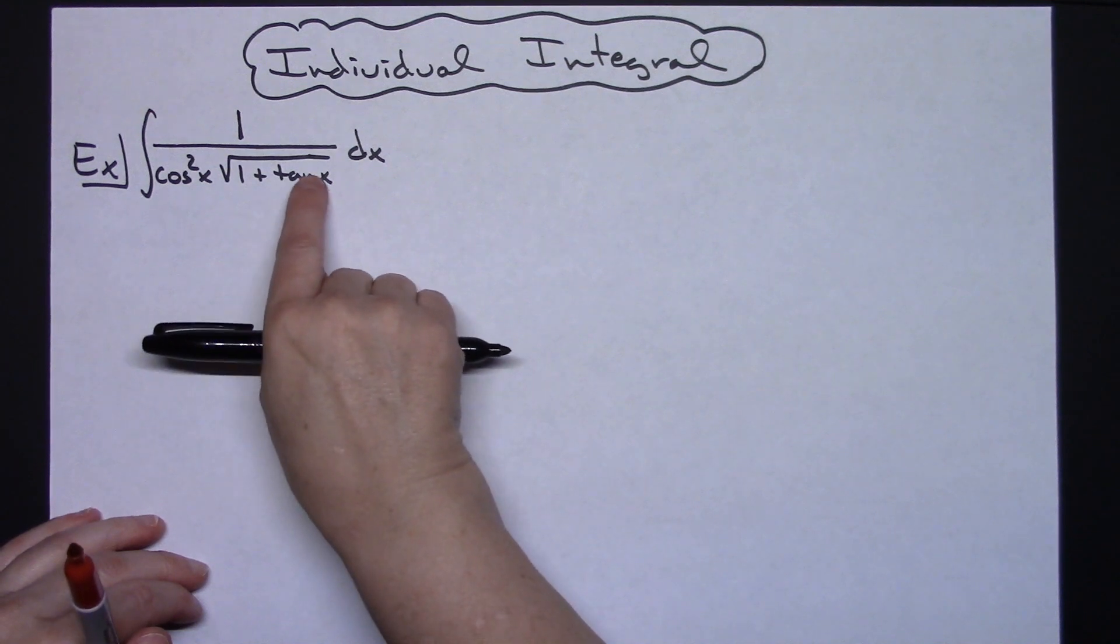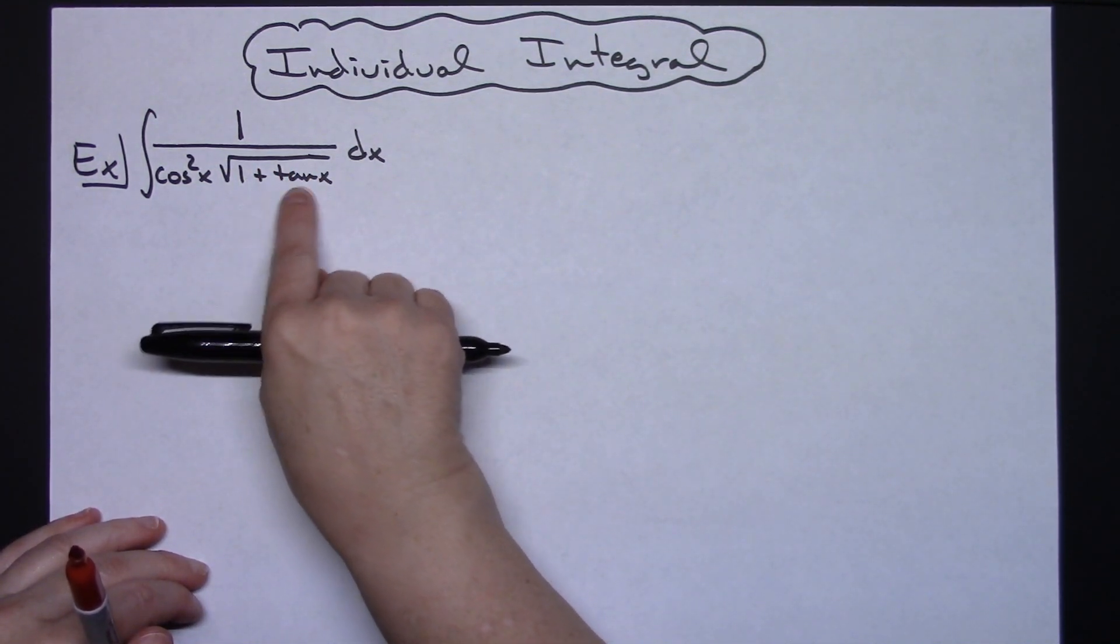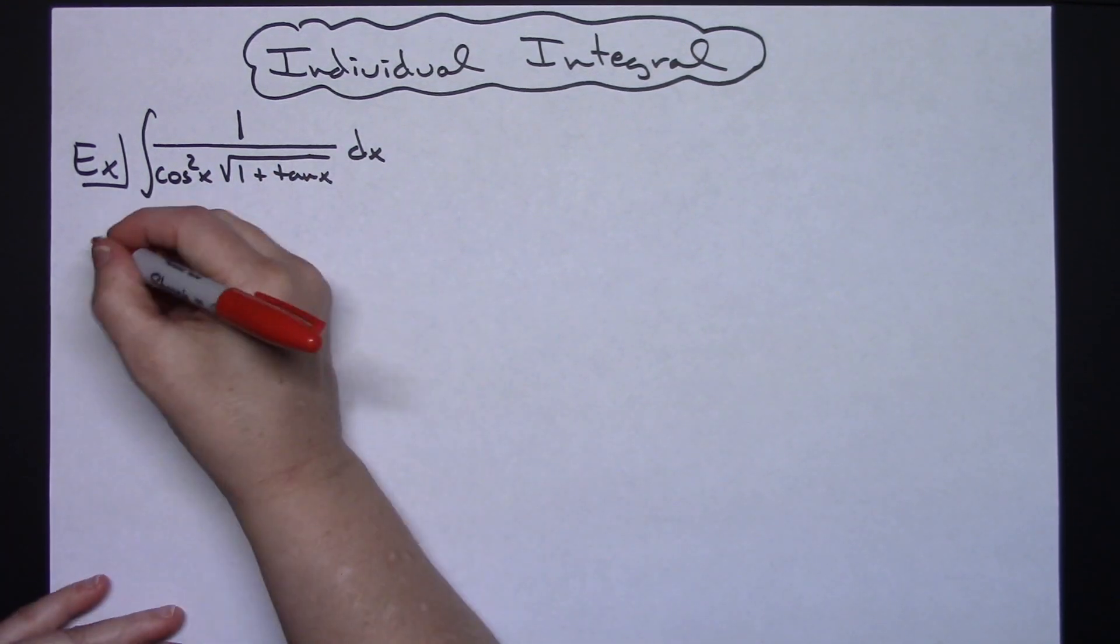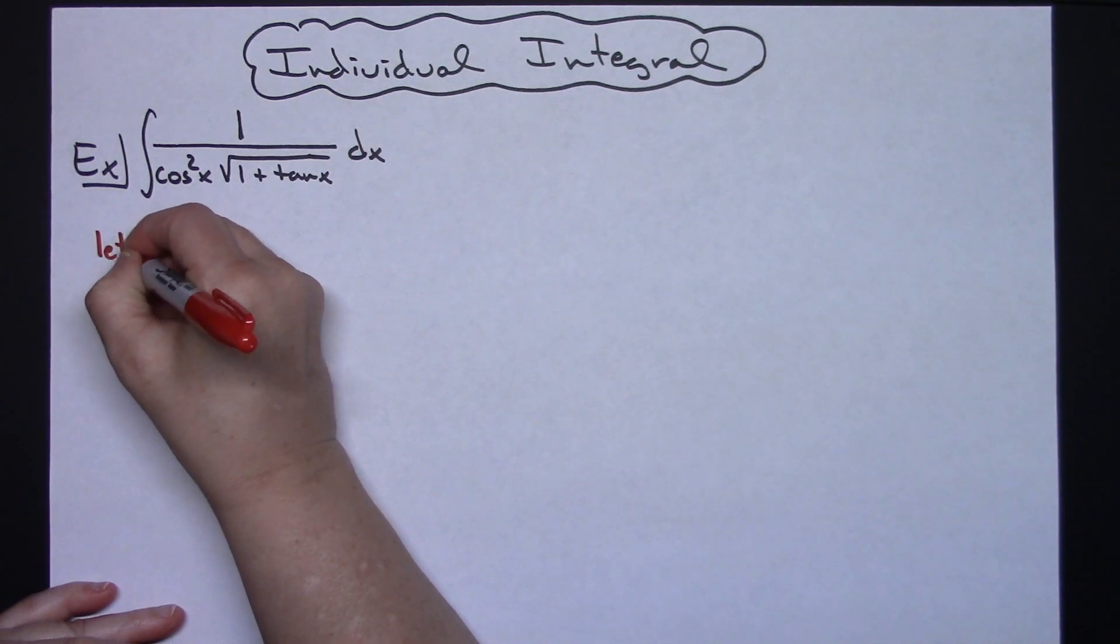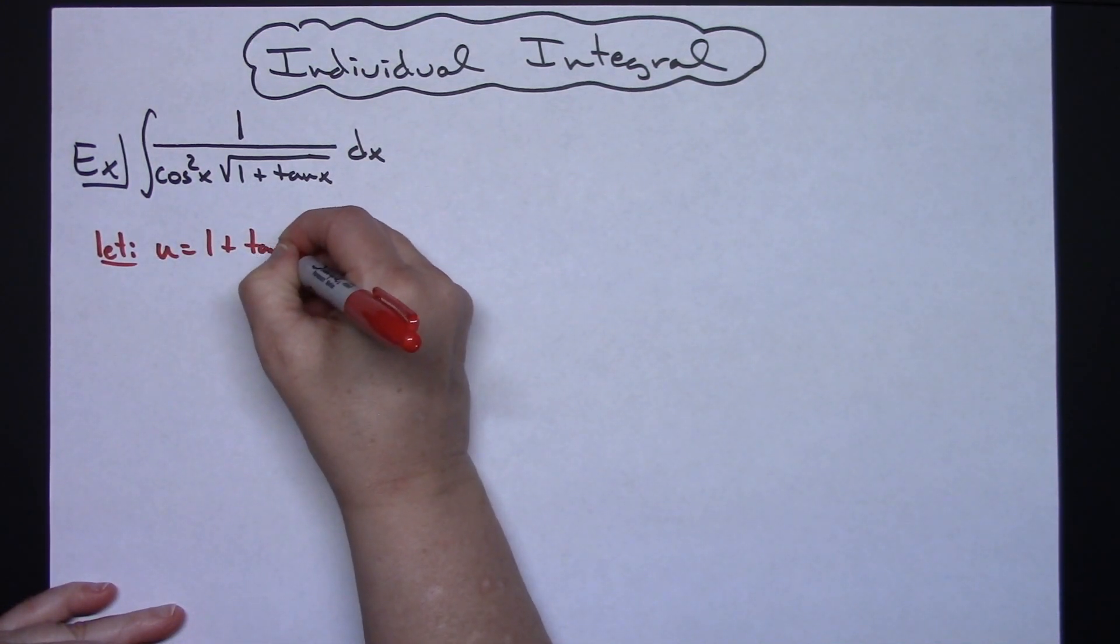With that being said we're going to take a look at the innermost part of our square root and we're going to allow our u to be that. So we're going to start with saying let u equal 1 plus tangent x.